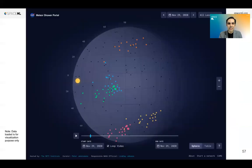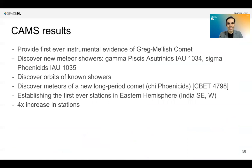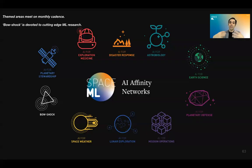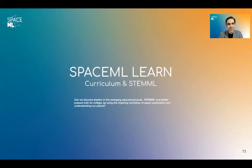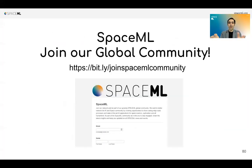This takes expertise from people on all sides, and we need those contributors. My message to you is to join us at SpaceML. We have affinity networks from disaster response to astrobiology to earth sciences to lunar exploration, and we want to turn those research papers into actual deployed projects and increase the state of the art in the SpaceML community. I would love to invite you to SpaceML — you can join at the Bitly link on screen. Thanks for joining us today, and I hope to see you at SpaceML.